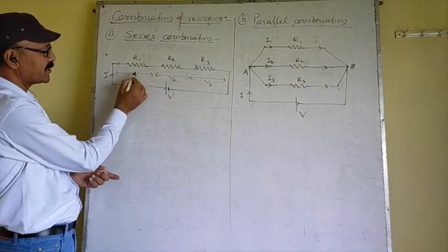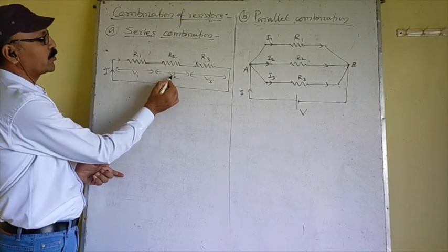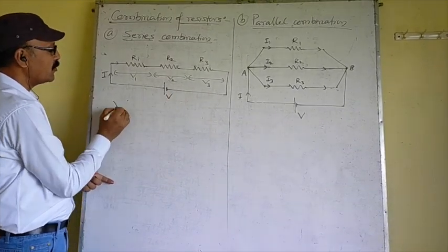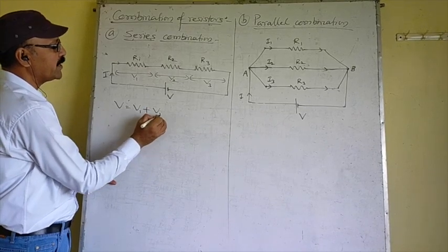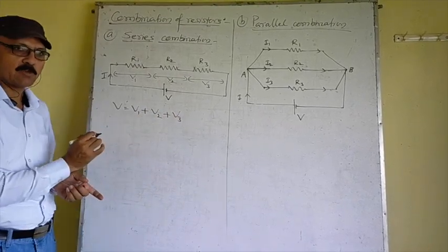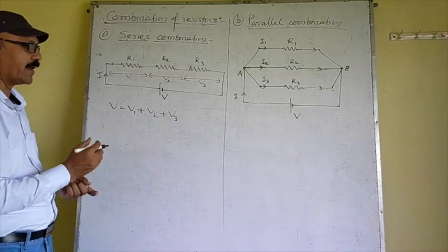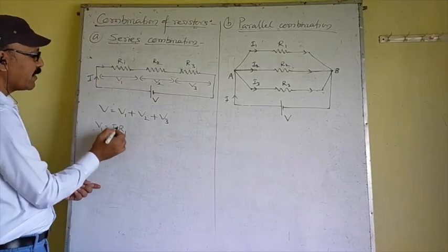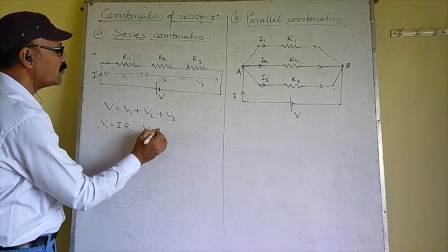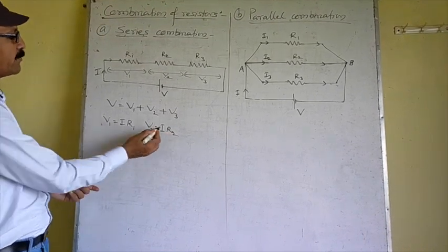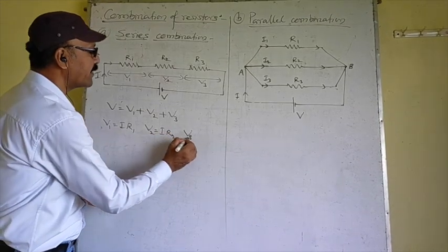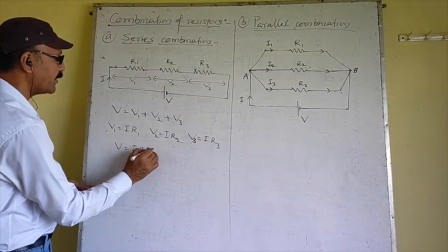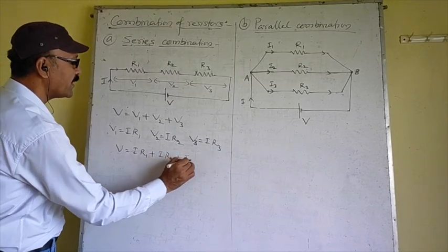The potential across the first resistance is V1, across the second resistance is V2, and across the third resistance is V3, and the total potential is V. So V = V1 + V2 + V3. Putting in the values using Ohm's Law: V1 = IR1, V2 = IR2, and V3 = IR3, since the current is the same but the resistances are different.